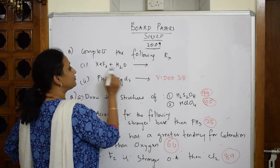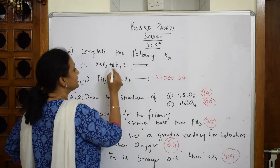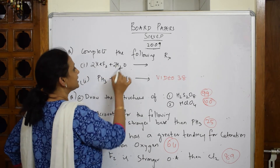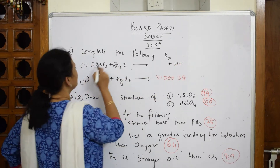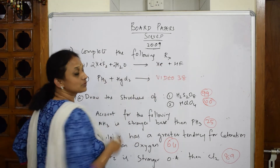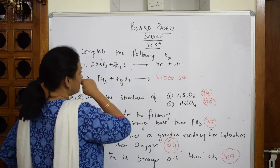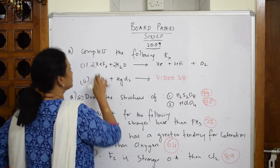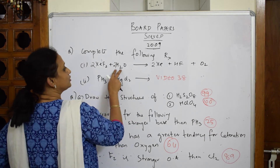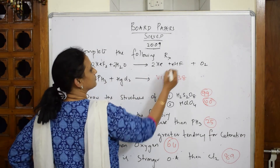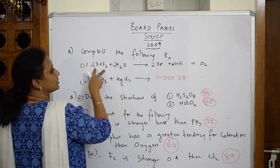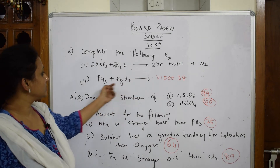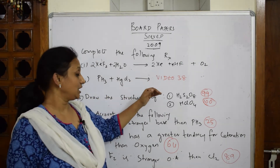Whenever you find such reactions, try to pick up two moles — it's easy to remember. The first thing: HF would come out, and along with that there's a cleavage of the bond. Xenon also comes out. After this, oxygen combines. So two xenons, two H's, four F's — try to make four. Fluorine is already four, oxygen is two. This is a balanced reaction.